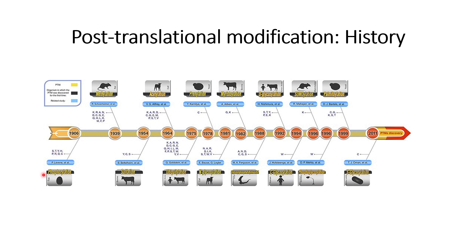Phosphorylation was discovered in 1906, during the early stage of the 20th century. It plays an important role in activating various signals that can cause different changes in cells, such as epigenetic changes. We have seen one example of phosphorylation in a previous video, where it affects global mRNA translation via phosphorylation of the eIF2-alpha complex.